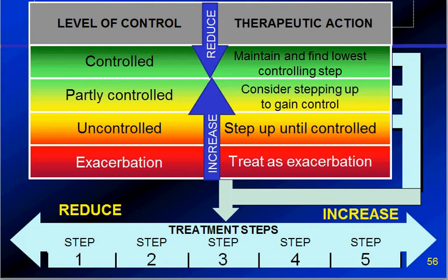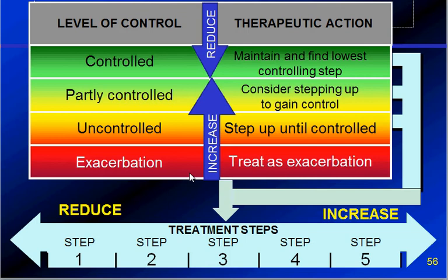The treatment of bronchial asthma mainly depends on identifying the level of control. Depending on that, the therapeutic action will be tailored. If asthma is very well controlled, maintain and find the lowest controlling step. If partially controlled, consider stepping up to gain control. If uncontrolled, step up until it is controlled. If there are exacerbations, treat exacerbations. Once the uncontrolled asthma is being controlled, try to reduce the dose. If asthma moves from controlled to uncontrolled, increase the dose.